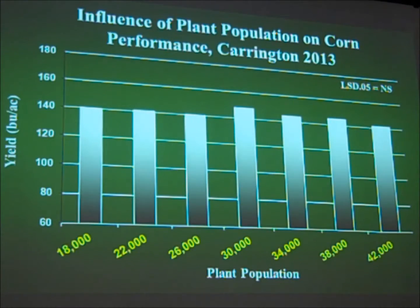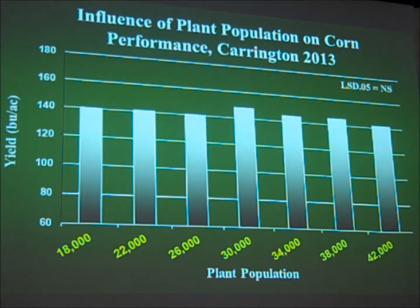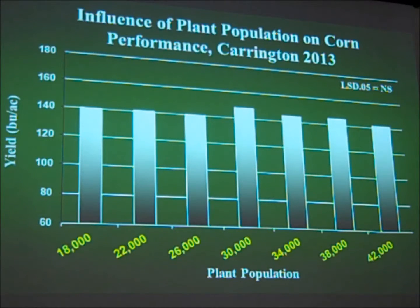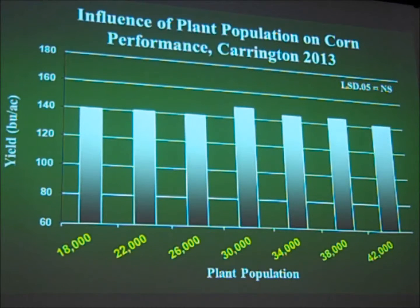This is data from 2013. The bars represent the average of the four hybrids within each population. The trial is replicated four times. This year our response was actually even more flat than it was last year — there were no significant differences across the different plant populations. It was a very different season with late planting, getting into the fields around May 12th to 17th, but that was the response we had this past season.